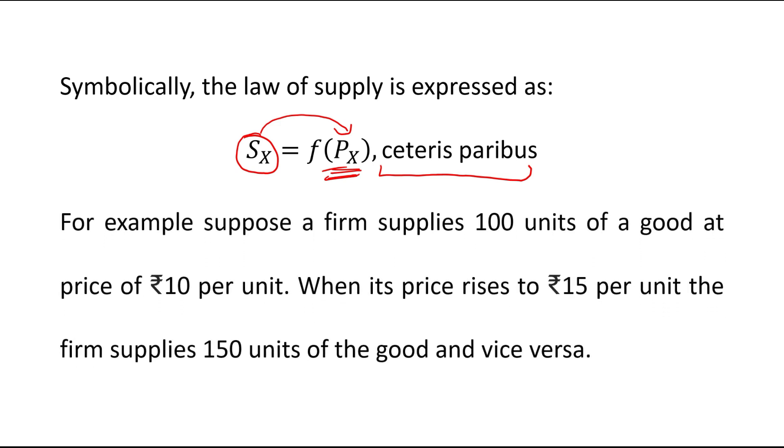For example, suppose a firm supplies 100 units of a good at a price of rupees 10 per unit. When price was rupees 10, the firm supplied 100 units. When its price rises to rupees 15 per unit, the firm supplies 150 units of the good and vice versa. When price increased to rupees 15 per unit, the firm increased its supply to 150 units.